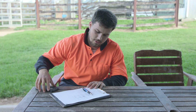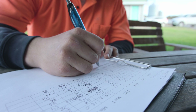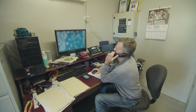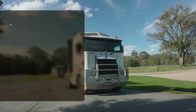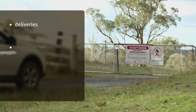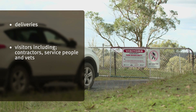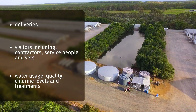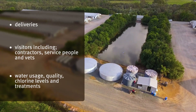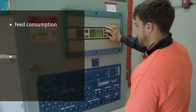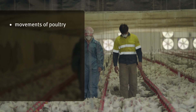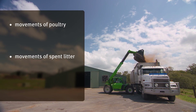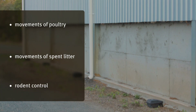Keeping routine records is important for production and performance purposes, and also for demonstrating that you've met your biosecurity duty and obligations. Always keep records of deliveries, visitors including contractors, service people and vets, water usage, quality, chlorine levels and treatments, feed consumption, shed conditions, mortalities including culls, movements of poultry, movements of spent litter, and rodent control.